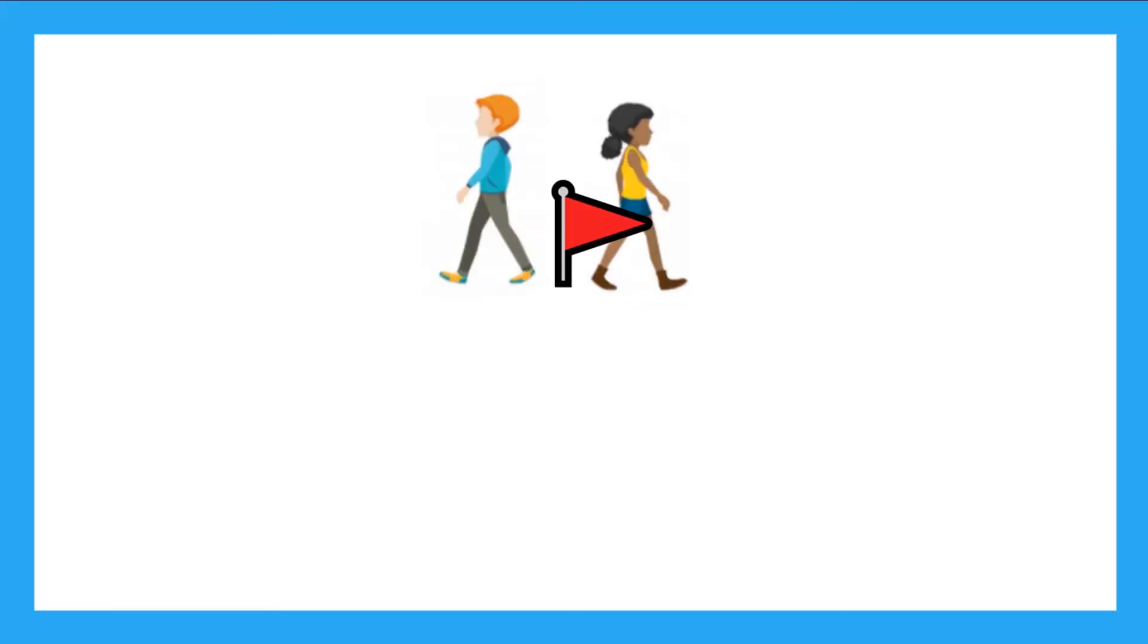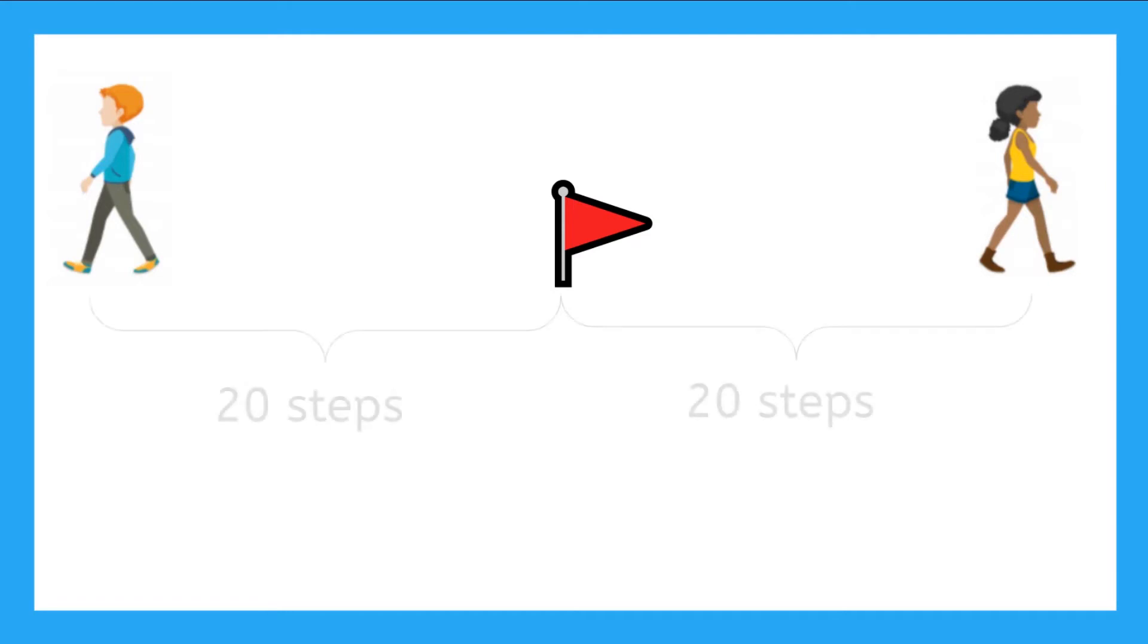Sarah and David are standing back to back at a red flag. If Sarah takes 20 steps to the right and David takes 20 steps to the left, who has traveled the farthest? Well, they have both taken 20 steps, so they've traveled the same distance from the flag, right? They each took 20 equal-sized steps, just in different directions, but the distance they each traveled is the same length.